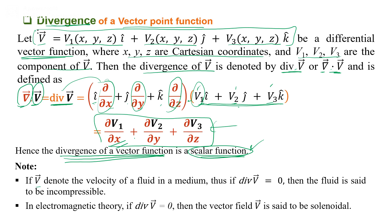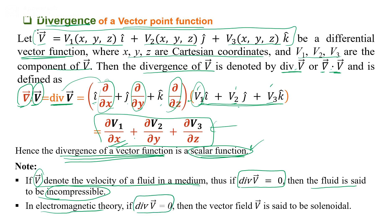If v denotes the velocity of a fluid in a medium — a vector point function representing velocity in a fluid medium — then if the divergence of v is zero, the fluid is said to be incompressible. In electromagnetic theory, if the divergence of v is zero, then the vector field v is said to be solenoidal. So remember: if divergence of a vector is zero, the field is solenoidal, or in the case of fluid, the fluid is incompressible.